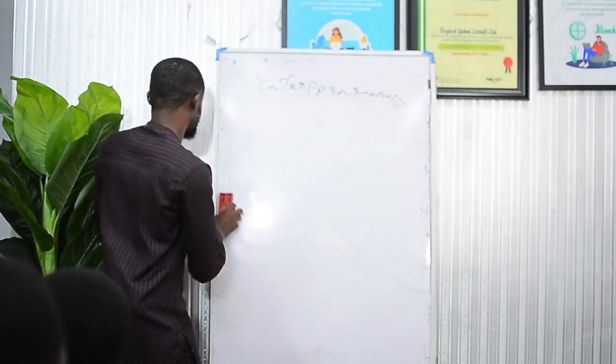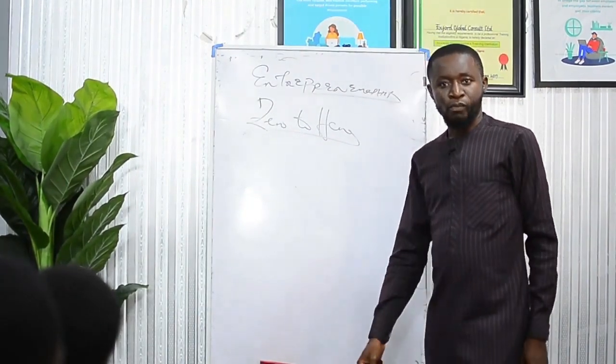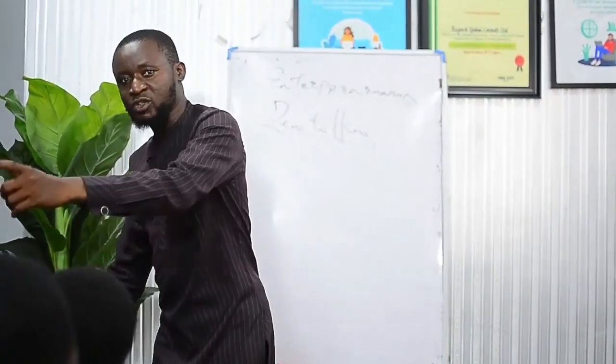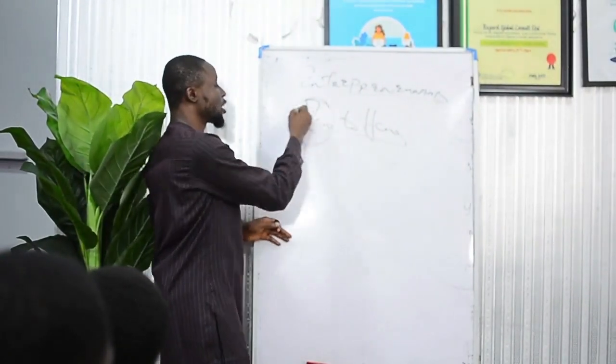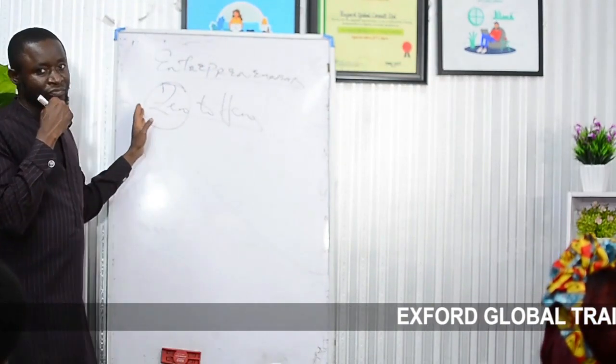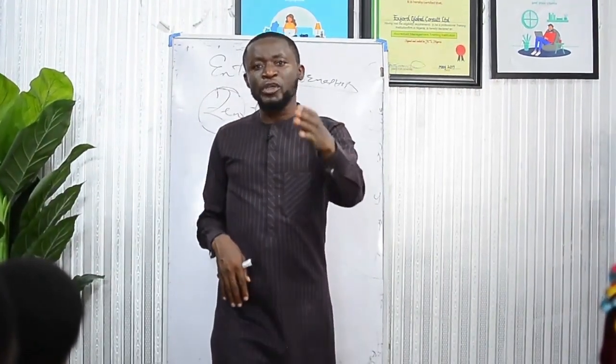Number three is how to go from zero to hero. Zero means when you tell most people to start a business, they say they don't have money. If that is the group you belong to, you are at zero. I want to teach you how to move from zero to become a hero — someone who is celebrated in an area. Most of the businesses you do without money are the businesses that will take you higher than businesses you start with money.